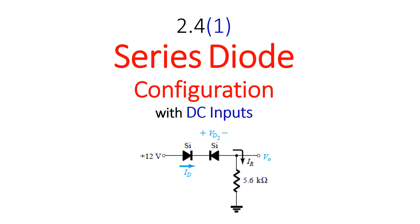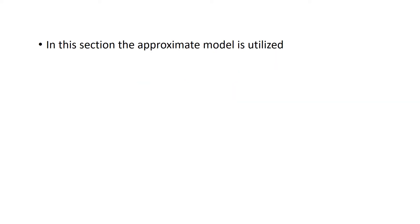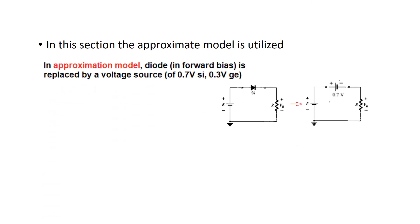In this video we will talk about series diode configuration with DC inputs, and in the process we will be solving examples 2.6 to 2.11 so that our basic concepts get clear. In this section we will be using the approximate model of diode. In the approximate model, when the diode is conducting, we assume there is a barrier potential of 0.7 volt, so the diode is replaced by a 0.7 volt battery. This is for silicon diode; for germanium it will be 0.3 volt.